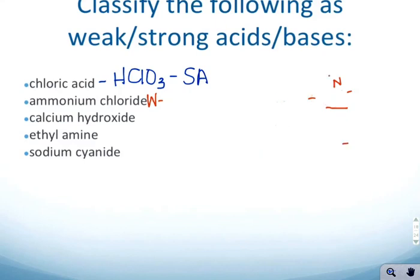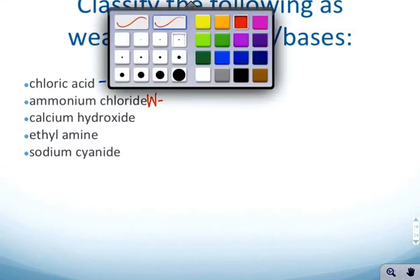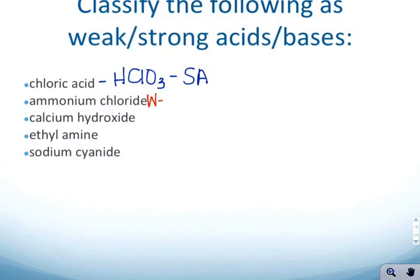Moving on to calcium hydroxide, Ca(OH)₂. Again, if you have memorized your strong acids and bases, you will instantly recognize this as a strong base. Ethylamine—you know what, I'm going to go ahead and pause this and I will have to make a part 6.